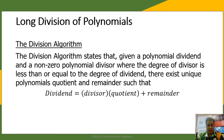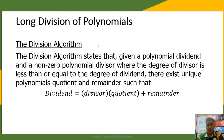If our denominator or divisor is not a monomial, we are going to use the long division method. The division algorithm states that given a polynomial dividend and a non-zero polynomial divisor, where the degree of the divisor is less than or equal to the degree of the dividend, there exist unique polynomials quotient and remainder such that the dividend equals the divisor times the quotient plus the remainder.